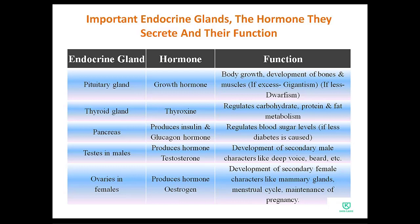The next endocrine gland is the ovaries in females. The hormone produced is estrogen. The function of estrogen is the development of secondary female characters, including development of mammary glands, maintenance of the menstrual cycle, and maintenance of pregnancy.